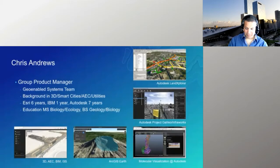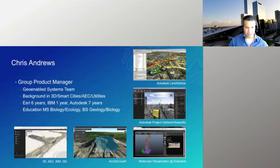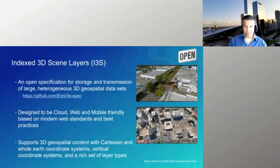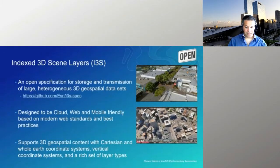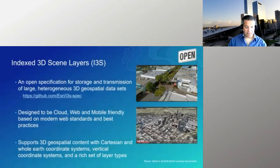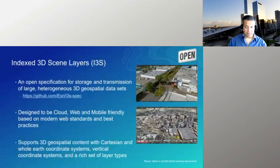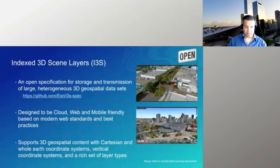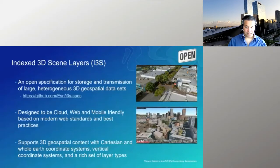A quick overview of my background: I've been at Esri about six years. Before that I was at IBM and then Autodesk, and previously in the enterprise integration consulting market. My background is primarily in 3D, smart cities, AEC, and utilities, though my education was actually in biology and geology. I've been doing GIS since university. About six years ago, Esri introduced a new specification for streaming very large 3D datasets called I3S. Since then it's been moved through OGC as a community standard — it's designed to be cloud, web, and mobile friendly. It is completely open; anybody can use it without remuneration to Esri. It supports all kinds of geospatial workflows including BIM and custom coordinate systems.